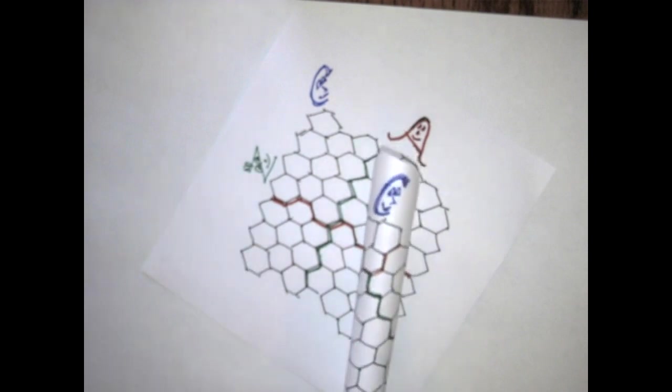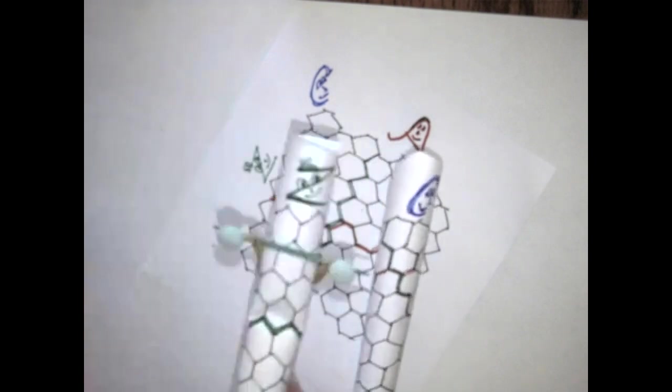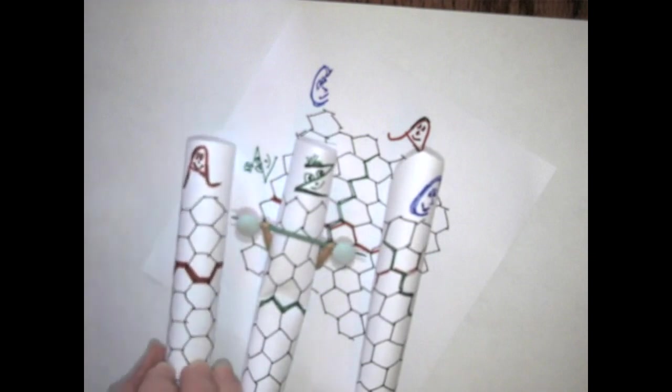You can keep all of your finger puppets on one sheet and just roll them in different ways to see the different types of carbon nanotube patterns. Or you can make three different finger puppets and tape them together so that your finger puppets can talk to each other about their different properties.